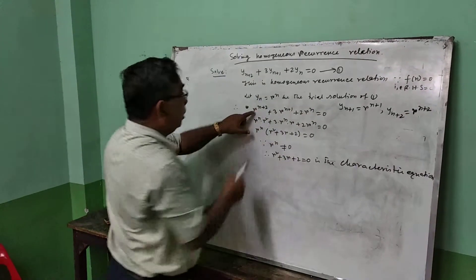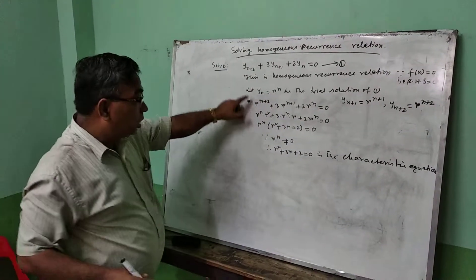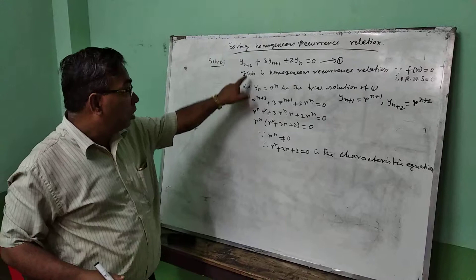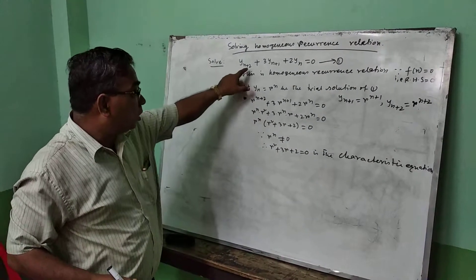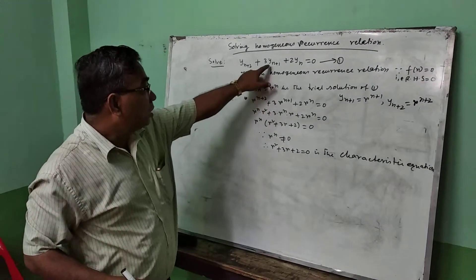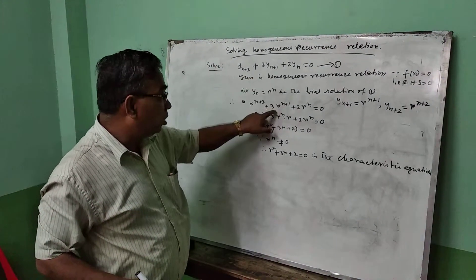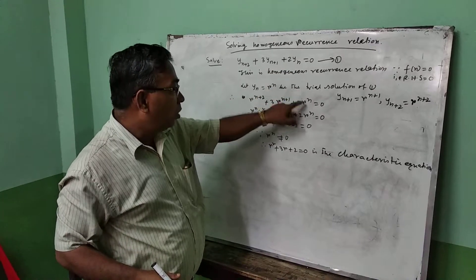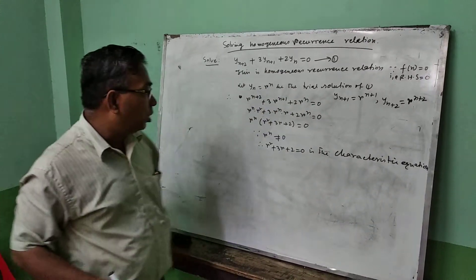First I am putting these into the equation now. y(n+2) gives r^(n+2), y(n+1) gives r^(n+1), and y(n) gives r^n.